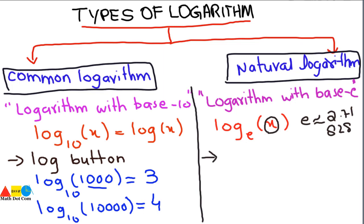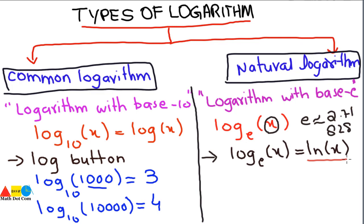There are two ways to write the natural log. You can write it as log base e of x, or it can also be written as ln of x. On the calculator, you will find the ln button for finding the natural log. Pressing ln of x on the calculator will give you the natural log of a given number.